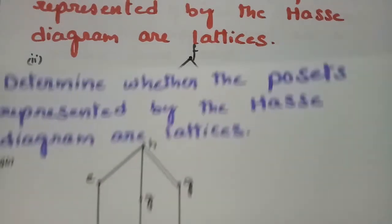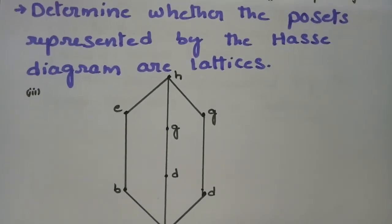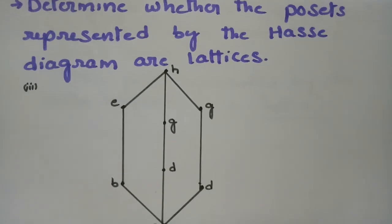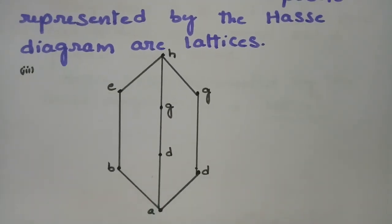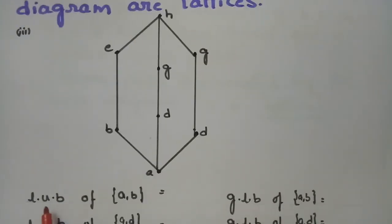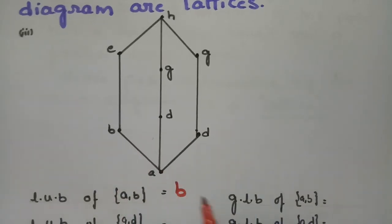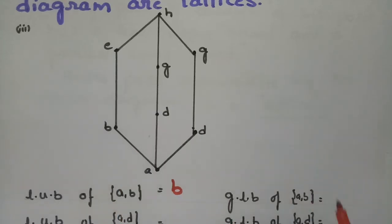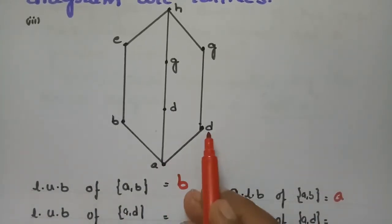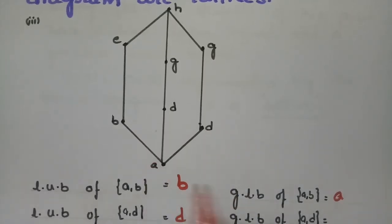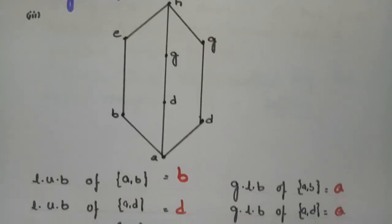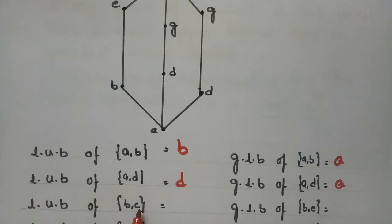Now the next problem: determine whether the poset represented by the Hasse diagram is a lattice. We have to mention the least upper bound as well as the greatest lower bound for each and every pair of elements. For (a, b): the upper bound is b and the lower bound is a. For (a, d): the upper bound is d and the lower bound is a.